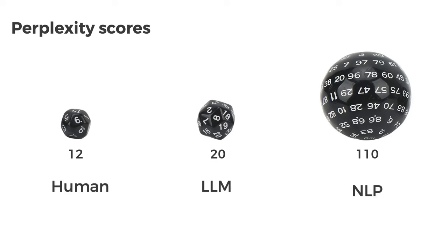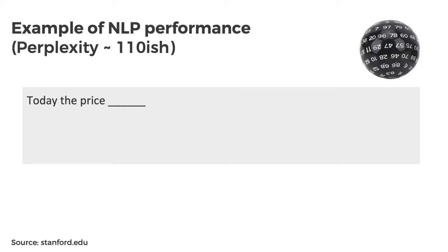To put it visually, you have a 110-sided die for NLP versus a 20-sided die for LLMs. At each next-word prediction, LLMs have about a 20-sided die and NLP has 110 sides in terms of uncertainty. That's roughly a five to six times improvement — that's why all this hype is coming in right now.